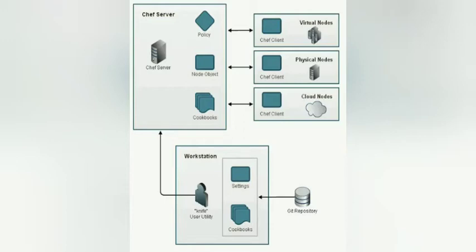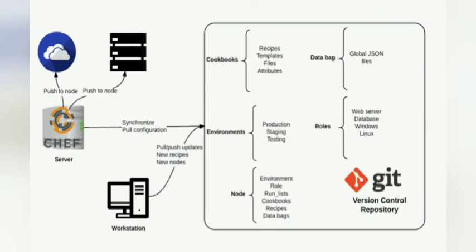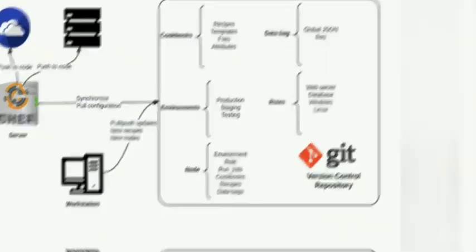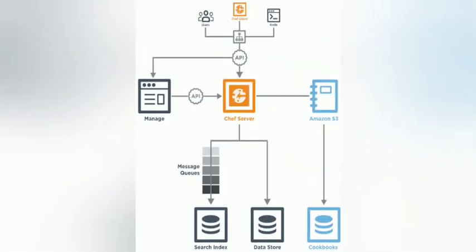Number 2: Workstations. Workstations are personal computers or virtual servers where all configuration code is created, tested, and changed. There can be as many workstations as needed, whether this be one per person or otherwise. Number 3: Nodes. Nodes are the servers that are managed by Chef — these are the machines that changes are being pushed to, generally a fleet of multiple machines that require the benefits of automation.